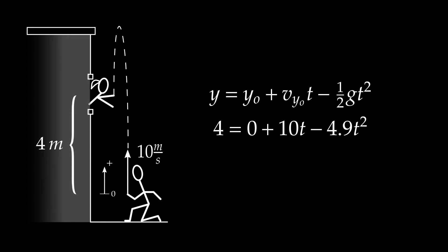I'll use the quadratic formula to solve it — a skill we all have. Doing that, I find two possibilities for time: one is 1.49 seconds, and a second is 0.55 seconds. Very often when solving physics problems involving time I'll get a positive root and a negative root, and I throw the negative root away because negative time doesn't make sense. But here I have two positive roots, so I need to consult the problem and consider the meaning of each root.